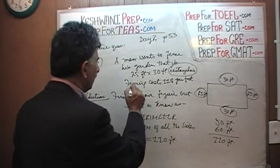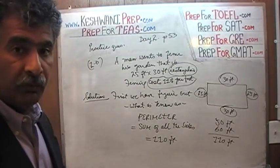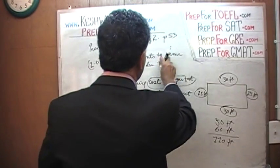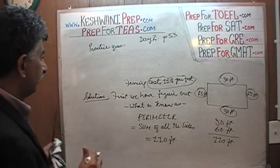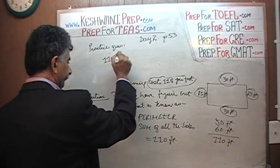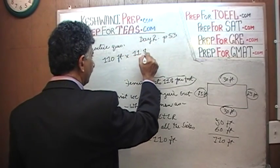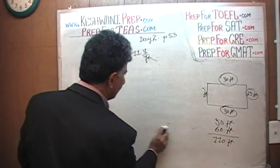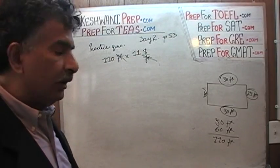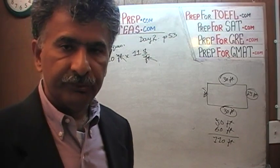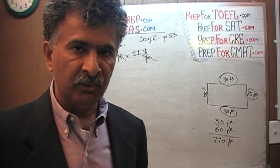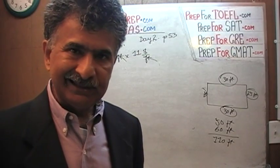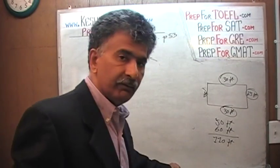We are told fencing costs 11 dollars per foot. To figure out the cost of the entire fence, we multiply 11 by the perimeter. This exam is very intense — not because it's difficult, but because they don't give you too much time. You have to go at a fairly good speed. To achieve that, there are some basic arithmetic things you must have at your fingertips.